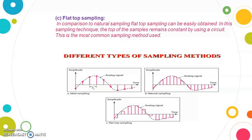In flat top sampling, compared to natural sampling, it can be easily obtained because the top of the samples remains constant. That constant level is maintained using a circuit, making this the most common sampling method used. You can see here: in ideal sampling many values are taken, in natural sampling only some values are taken, and in flat top sampling a circuit maintains a constant level. In all three methods, the overall shape of the analog waveform remains preserved.